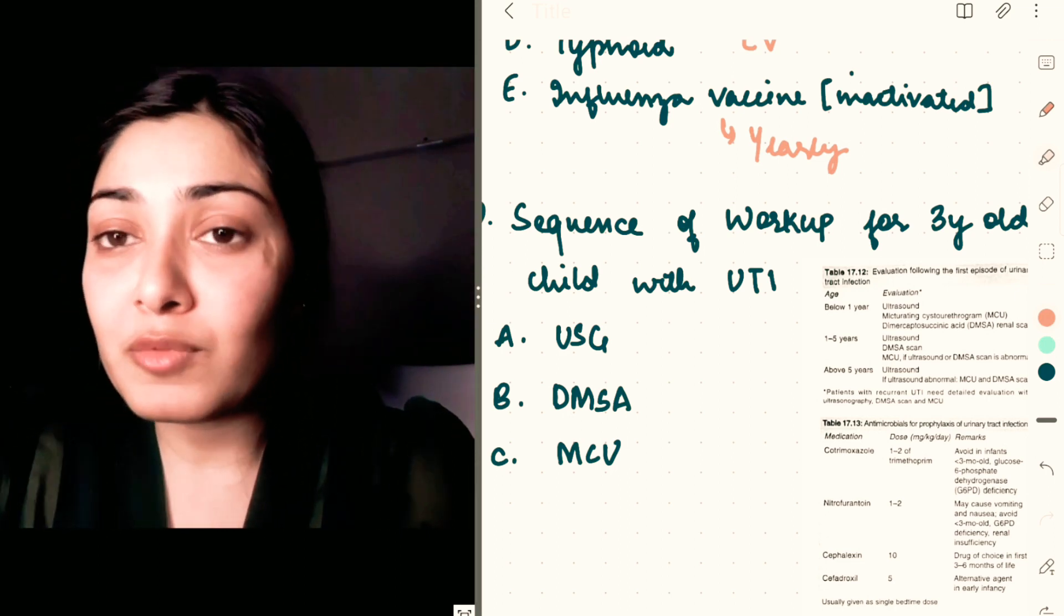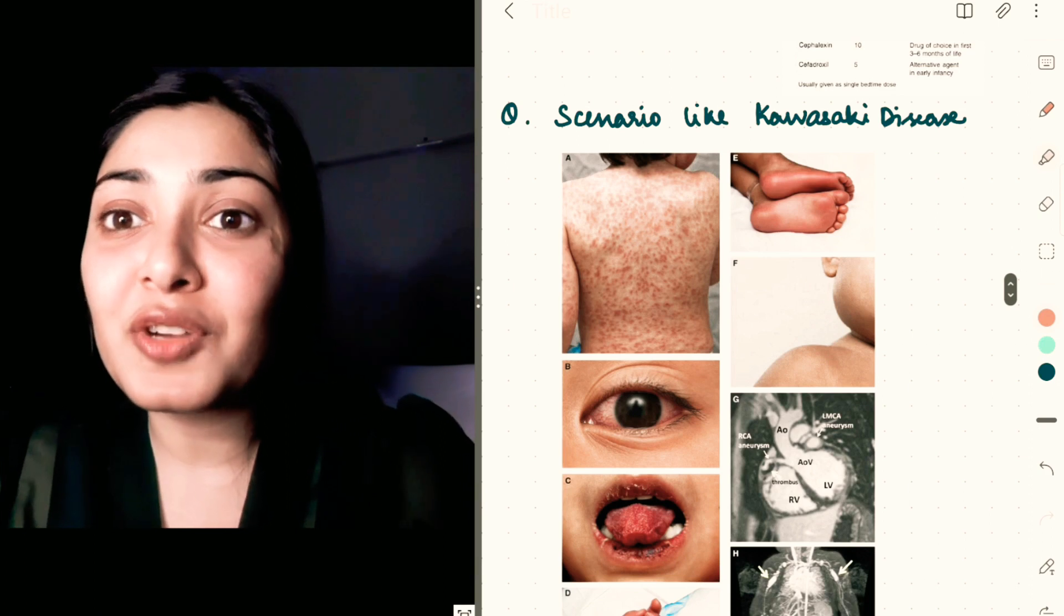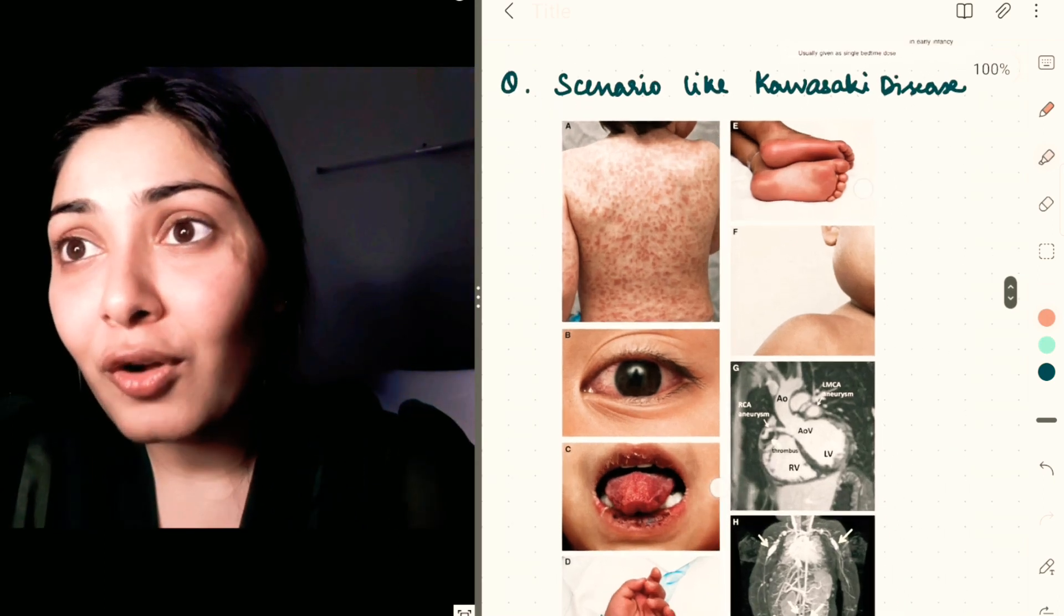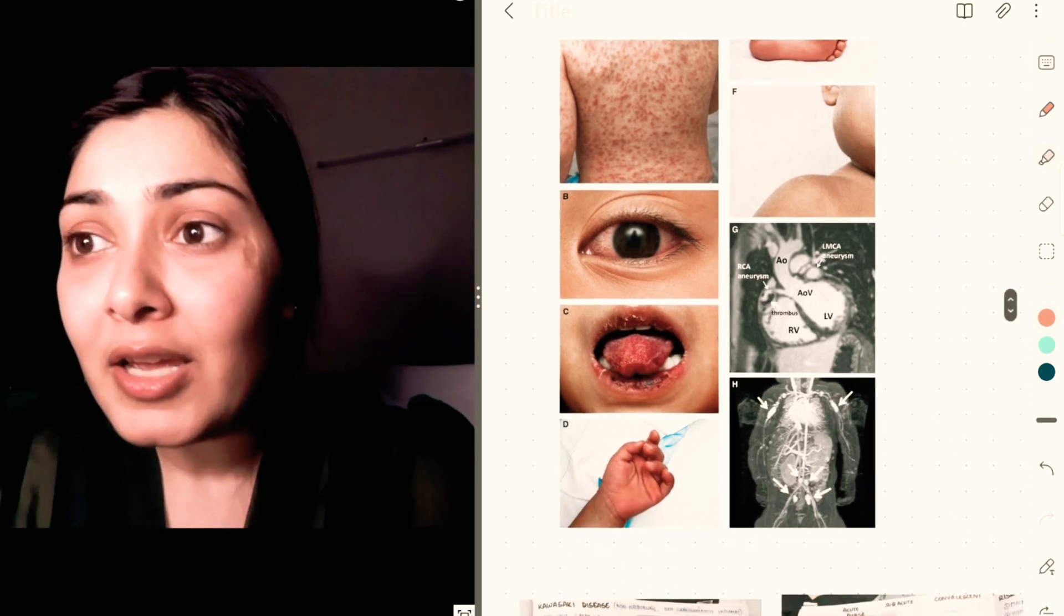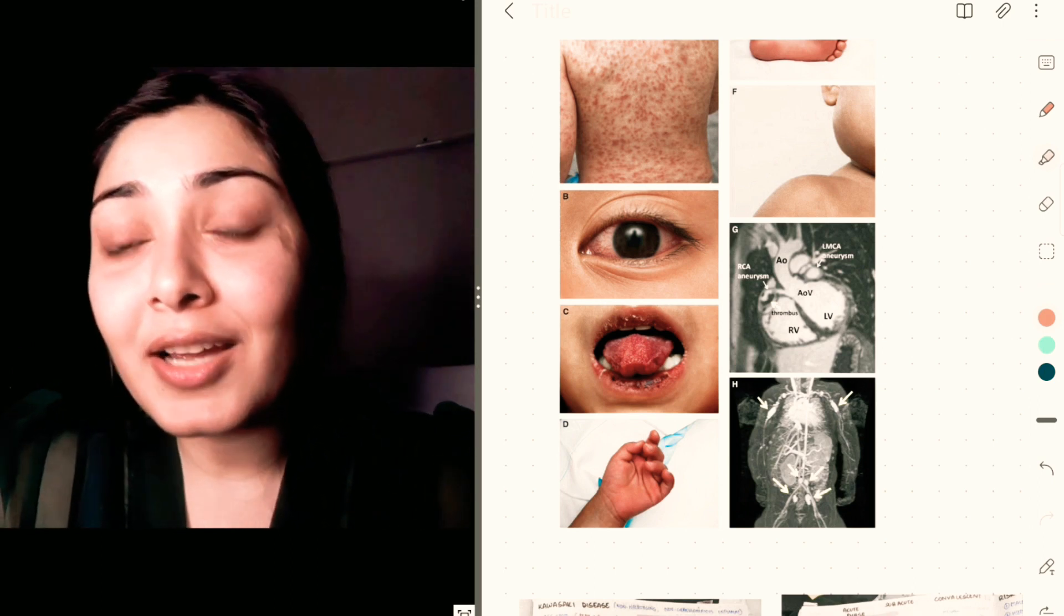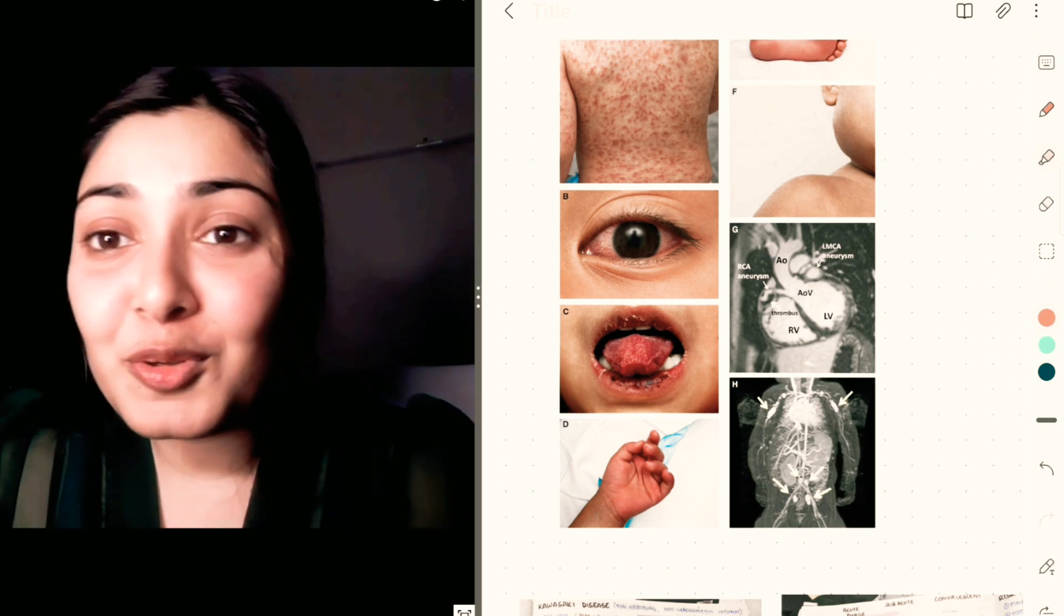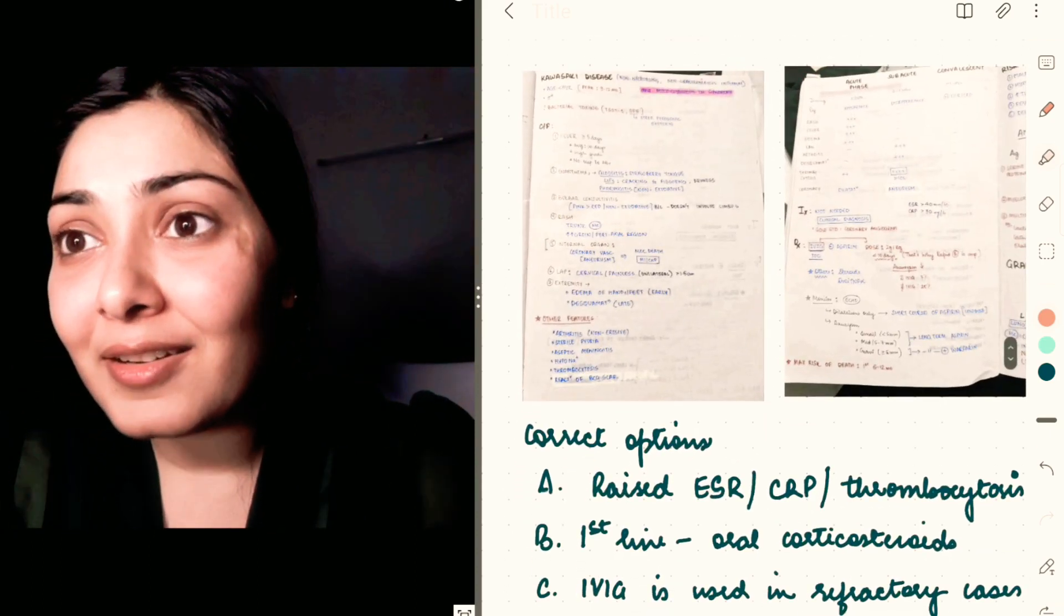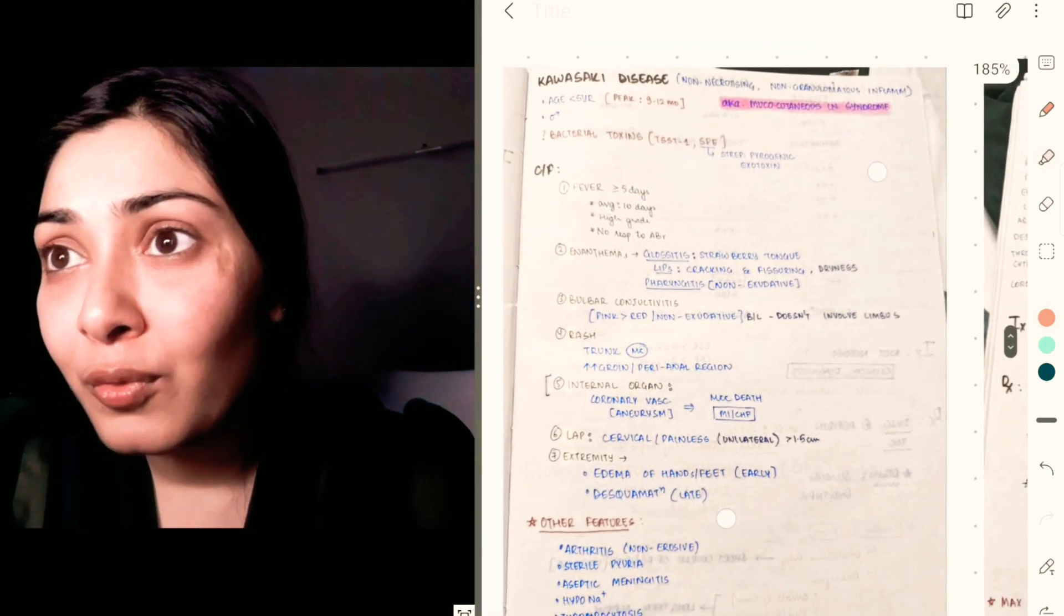Now coming to the next question, I think this question was missed during our first session. I got information about this question later on before that video was made. In session one, a scenario like Kawasaki disease was given—I think it was classical Kawasaki disease. As soon as I heard that there was a question on Kawasaki, an image from my notes just popped in my head because you revise them again and again, and my source has become my notes now. Here's a clip—these are my notes. If some of you want to check them out, there's a link in the description box.